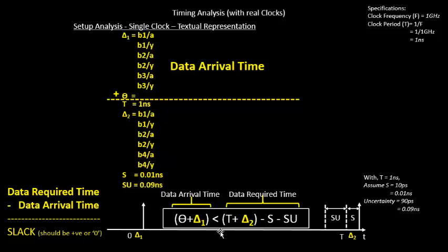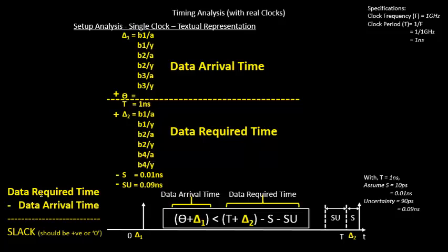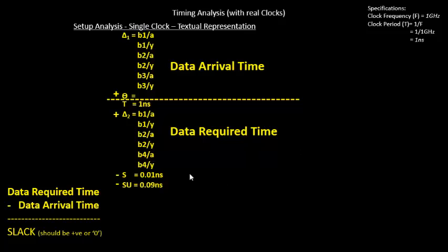When you compute T plus Delta 2 minus setup time minus setup uncertainty, that section becomes your data required time. Once you have data arrival time and data required time, subtracting data arrival time from data required time gives you the slack. We no longer need the graph since we've understood what it represents and will now work with the textual representation.